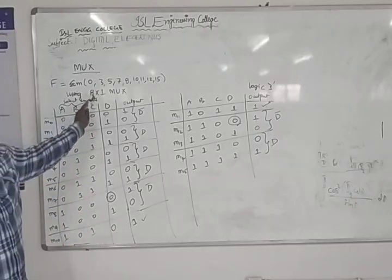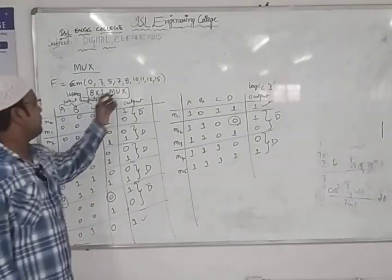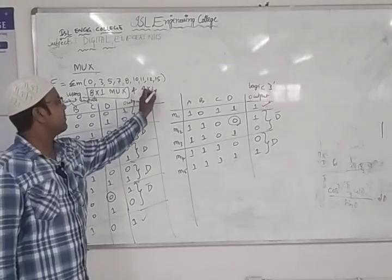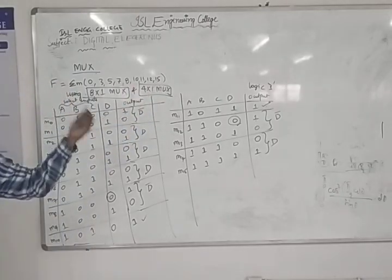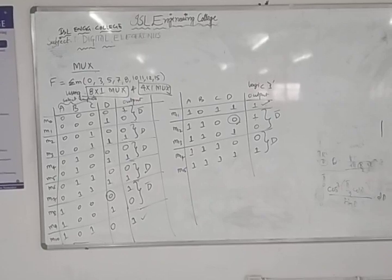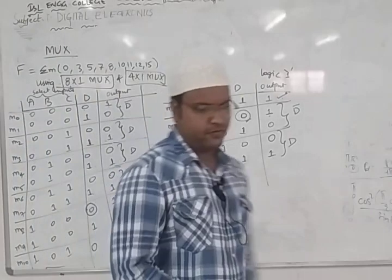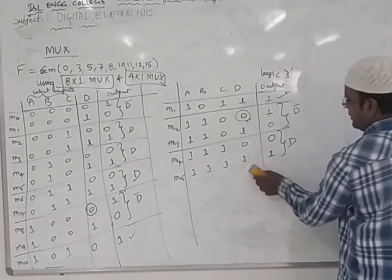Next, we design using the 8-to-1 multiplexer. In the question they ask to design using 8-to-1 MUX, or alternatively using 4-to-1 MUX — I'll show both. We already found the input values. Now we write the design for 8-to-1 and then 4-to-1 multiplexer.